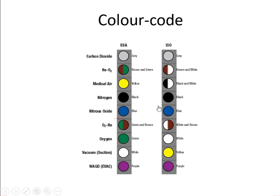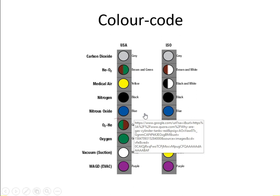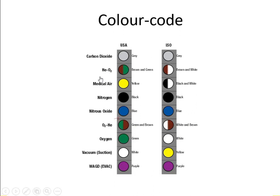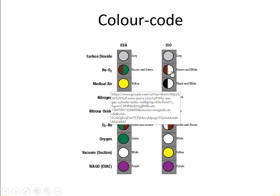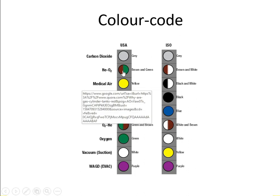Nitrous oxide — when given without oxygen or with very little oxygen — can cause cyanosis in the patient, which is why nitrous oxide is blue. Carbon dioxide is gray. Helium is brown. If you mix helium with oxygen to decrease gas density and overcome an obstruction in the patient's airway, you use what is called heliox — a combination of helium and oxygen. The heliox color is brown and green or brown and white, depending on the country.